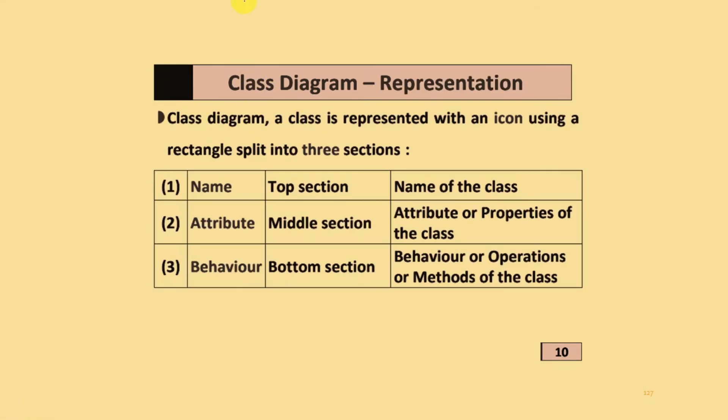What is class diagram representation? In a class diagram, a class is represented with an icon using a rectangle split into three sections: the name, attributes, and behavior. The name is in the top section, attributes or properties of the class in the middle section, and behavior or operations or methods of that class in the bottom section.